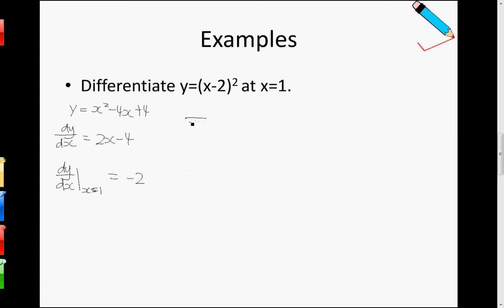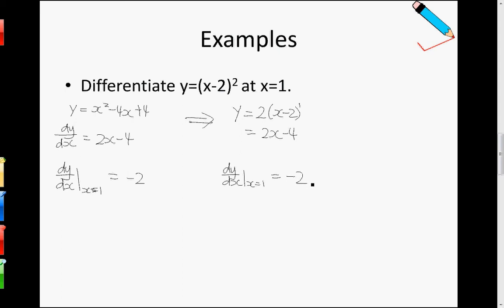So let's compare with the chain rule. So chain rule — we treat the thing in the bracket as a big x first, then differentiating this big x squared to get 2 times big x, where big x is just (x minus 2) to the power of 1. And then differentiating what's inside the brackets — differentiating x minus 2 gives us 1. So what we get is 2(x minus 2) times 1, which simplifies to 2x minus 4, which is the same. Subbing in x equals to 1, we would still obtain negative 2.